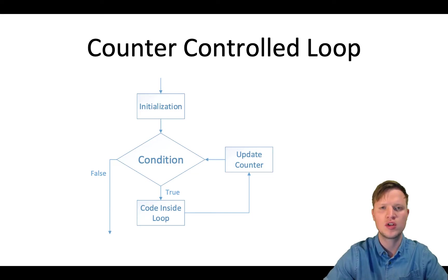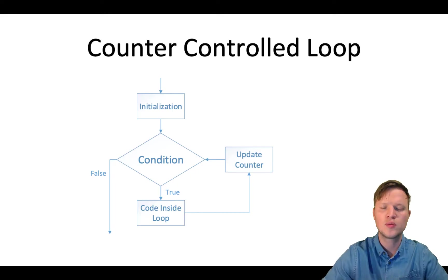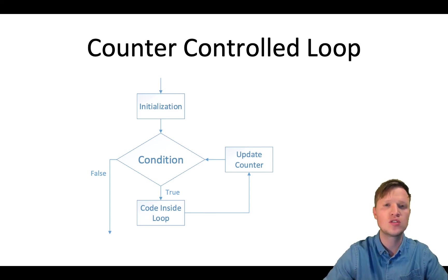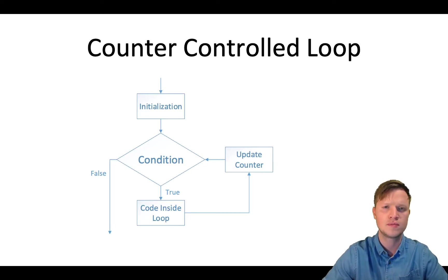There are four very important things that we need to have when we utilize counter controlled repetition. The first thing is we need to have a counter variable. It's imperative to have a counter variable because we need to count in that counter variable — let's say one, two, three, four, and five — and we need to store that value in some memory space. That's going to be our counter variable. Then we need to initialize that counter variable in the beginning.